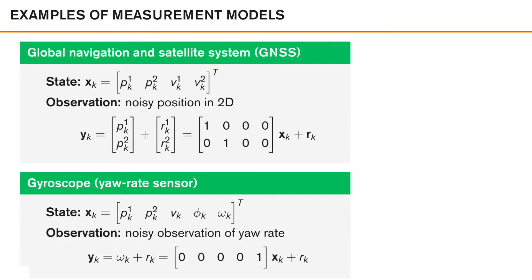I will go through four simple examples of measurement models on the next two slides. In the first example, I've assumed that we have a state vector described by this kind of constant velocity parametrization. So the first two here are the position and the last two here are velocities. Now, we have a global navigation and satellite system that gives noisy observations in 2D. Let's assume that we're only interested in 2D positions for simplicity.